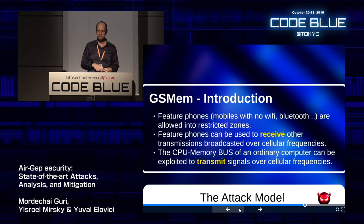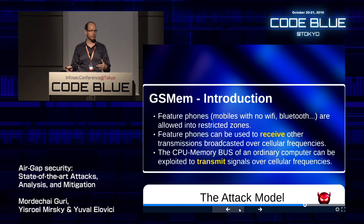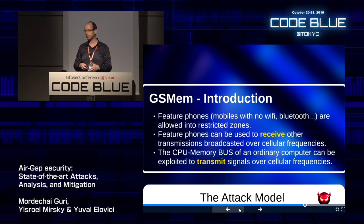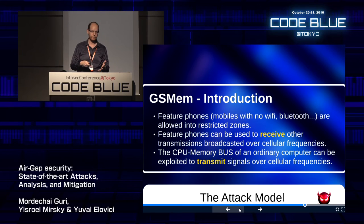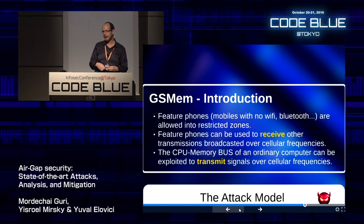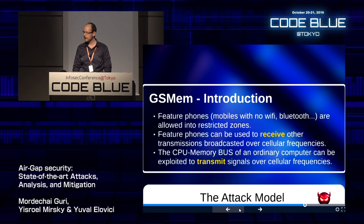GSMem was presented at Usenix 2015. Many organizations have restricted zones where visitors may bring feature phones — old Nokia-style phones without Bluetooth or Wi-Fi — but not smartphones. We wanted to show that information can be transmitted on GSM (2G) frequencies and picked up by even a feature phone. The question: how do you get a computer to become a cellular base station without additional hardware? The CPU-to-memory bus — the channels between the CPU and memory registers — actually acts as a very good antenna.